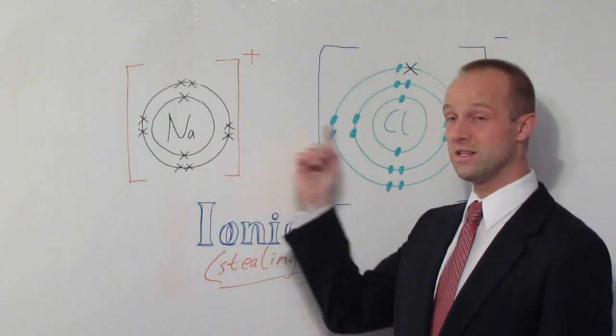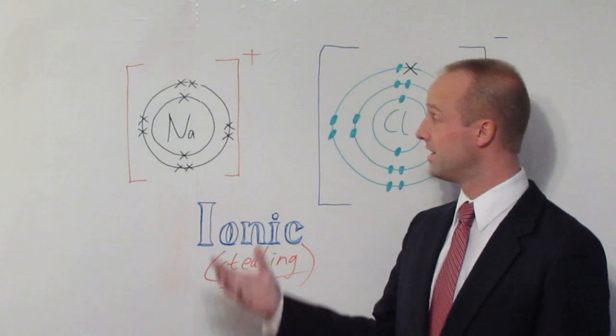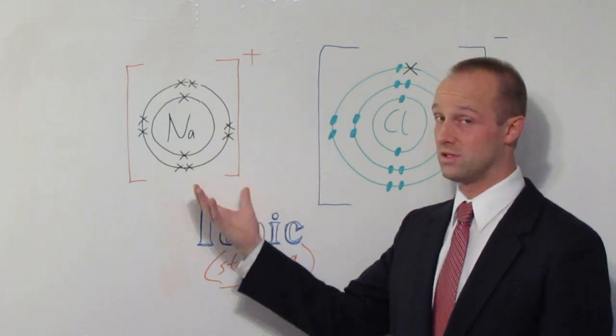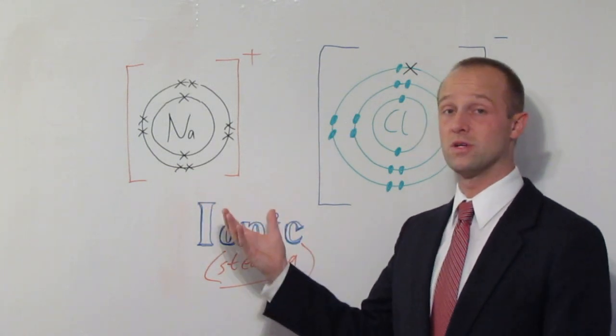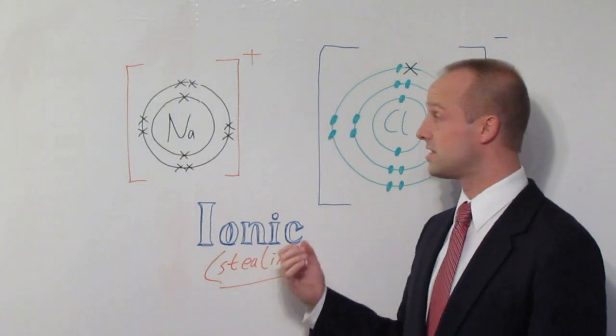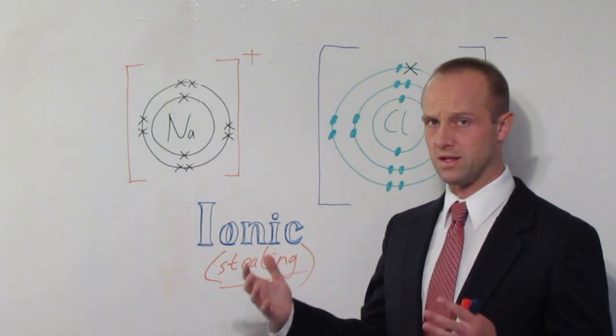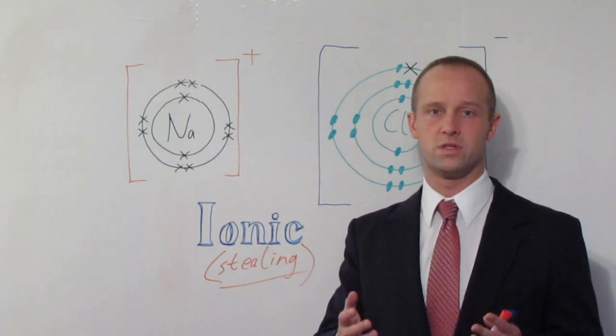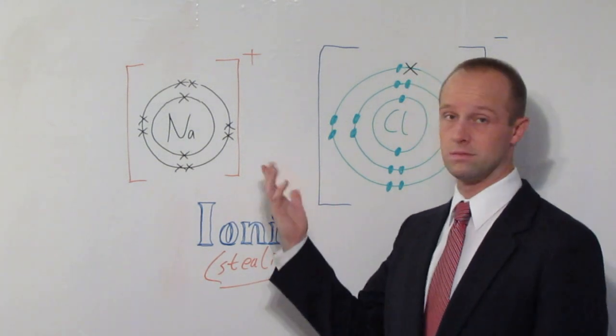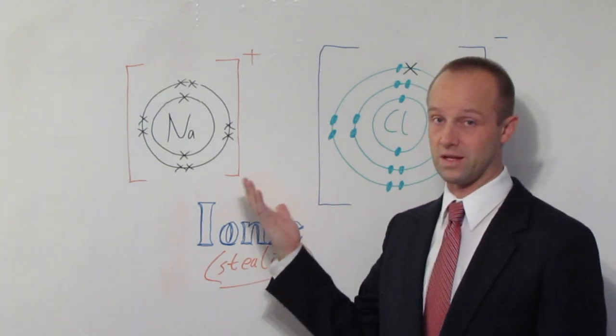And the thing is, because these two charges are equal and opposite, these two atoms, these two ions we should say now, they're now going to attract each other. And so ions tend to form large crystalline structures, which is exactly what you see with table salt. This is what's going on in table salt, that's what it is.